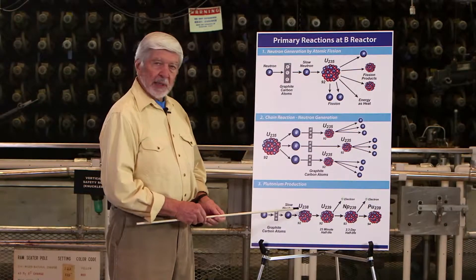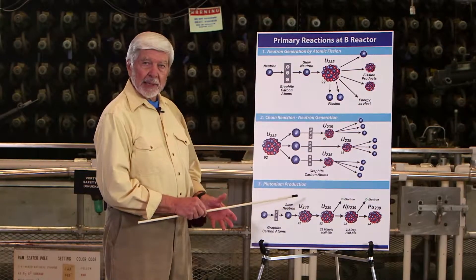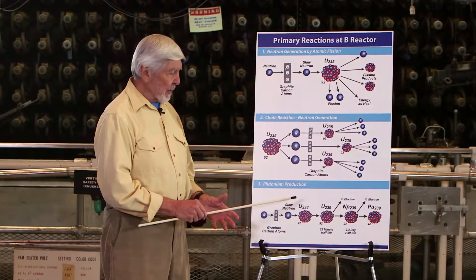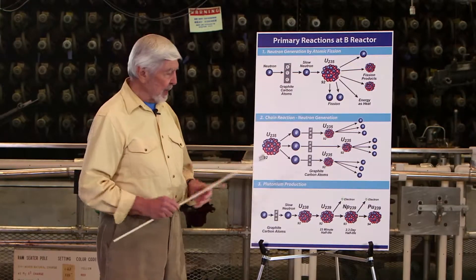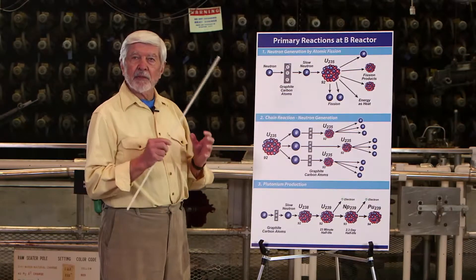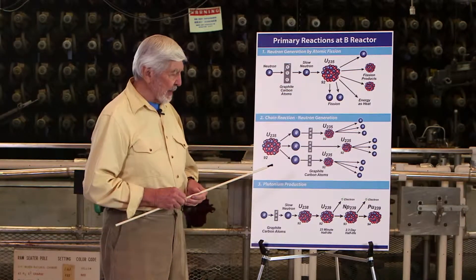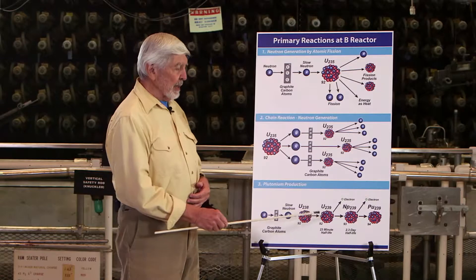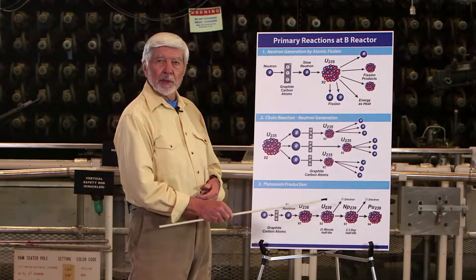When they intercept the uranium-238 isotope, which is most of natural uranium, the uranium-238 accepts the neutron but does not fission. Instead, it becomes a new isotope, uranium-239.